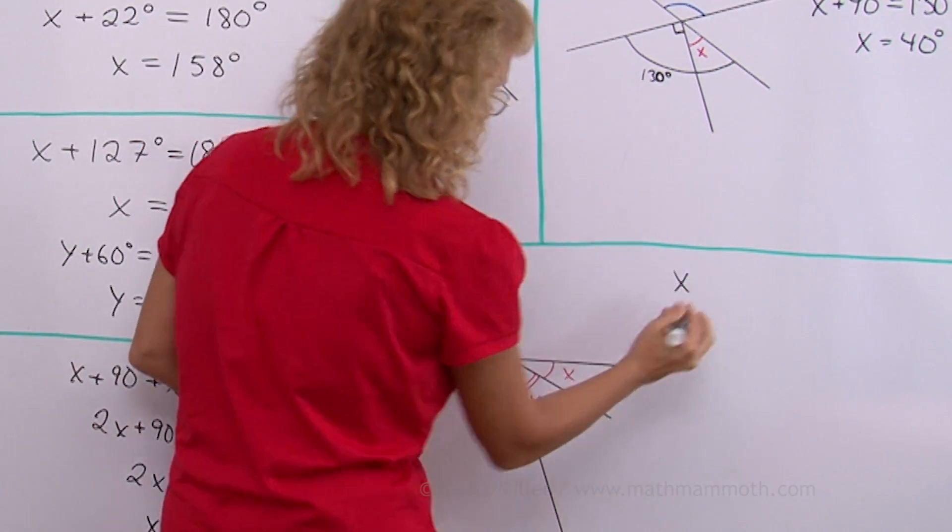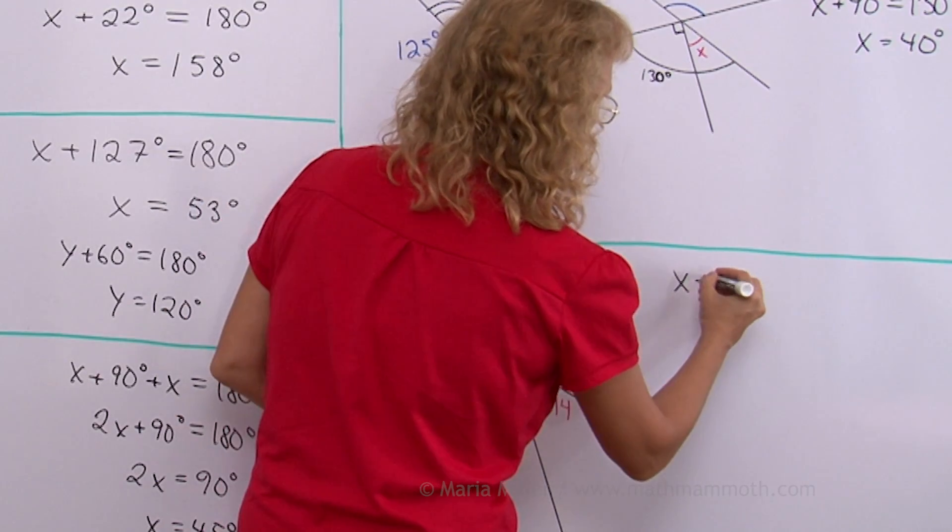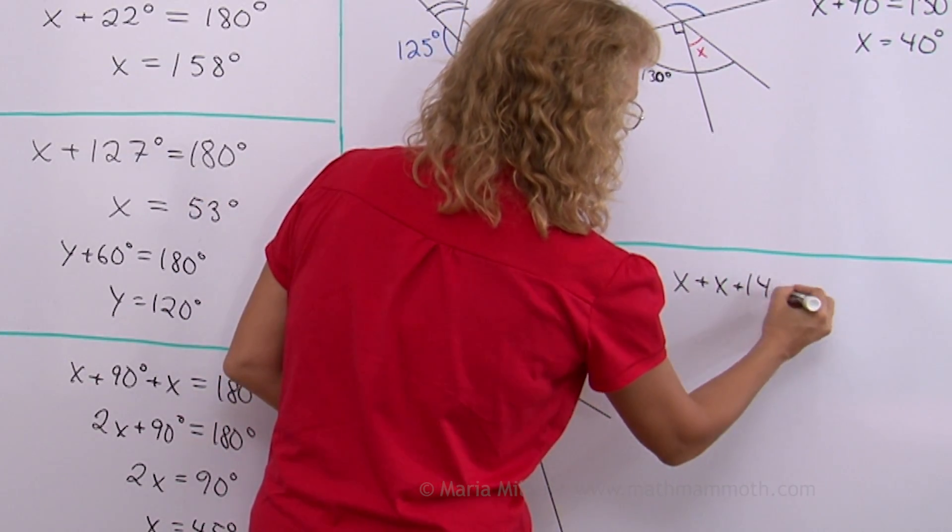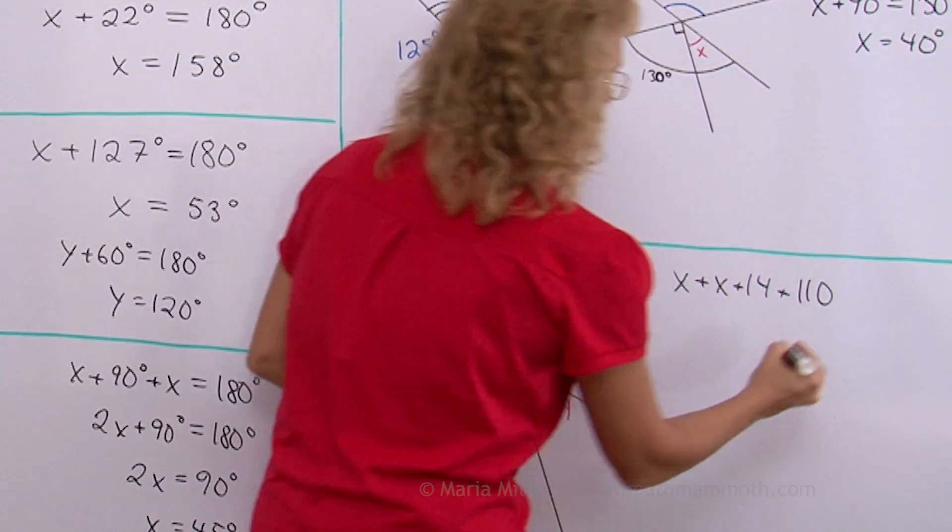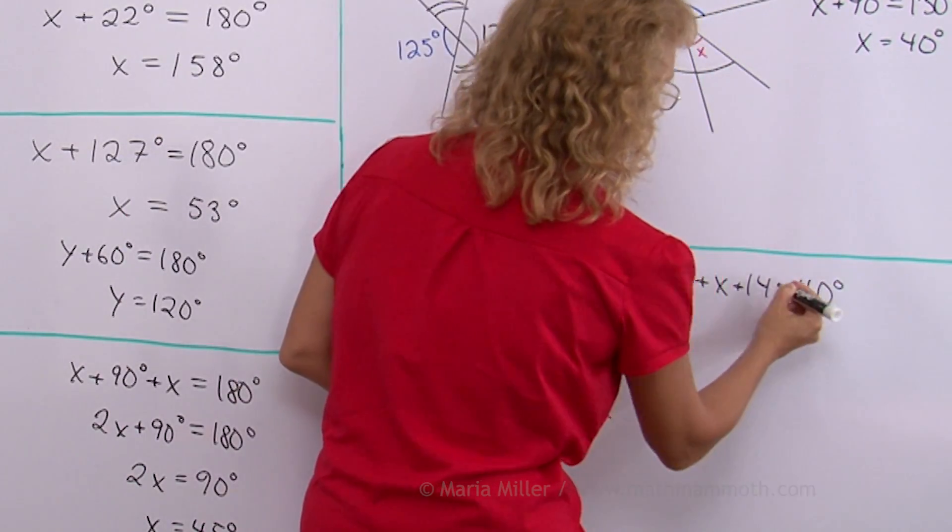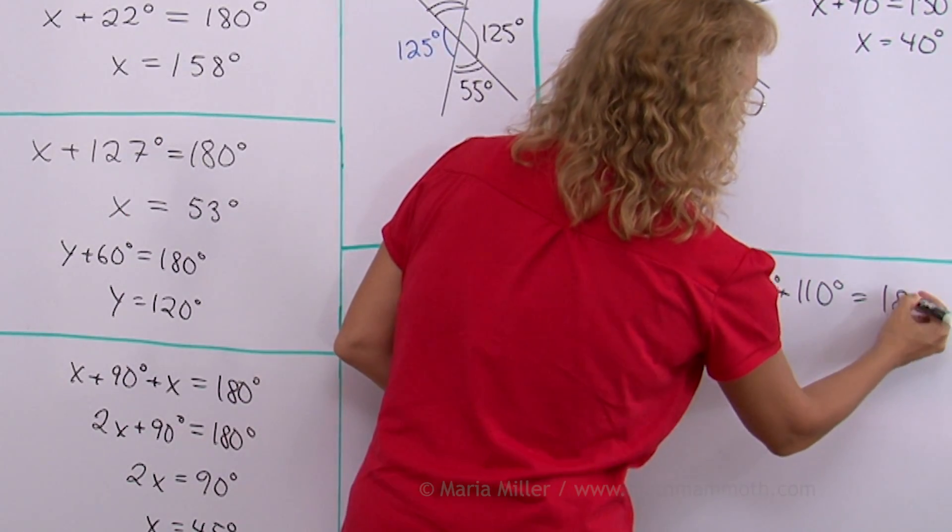Where x, this angle, then this angle which is x plus 14, then add 110. So those together make 180 degrees.